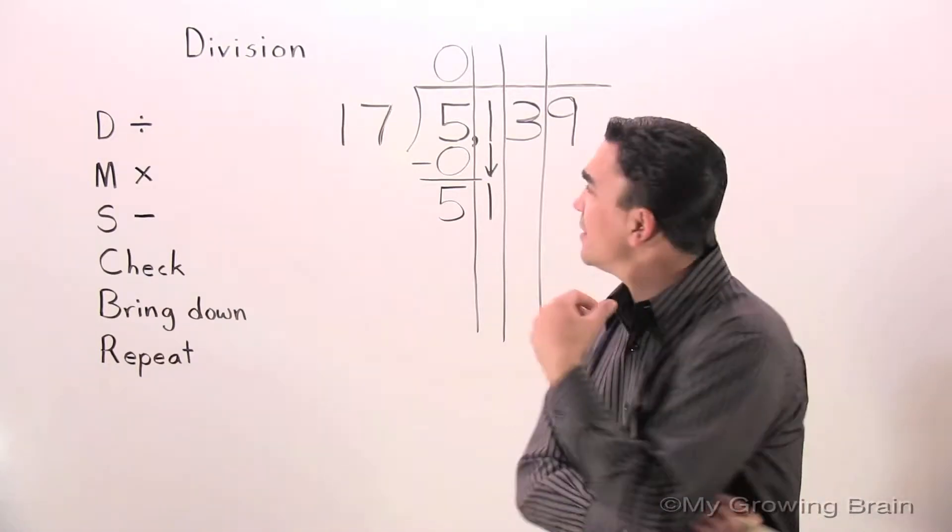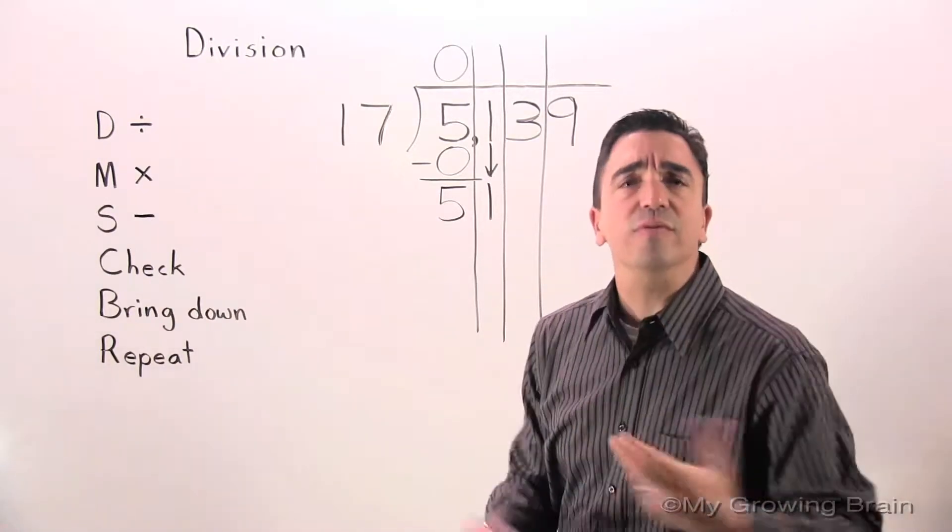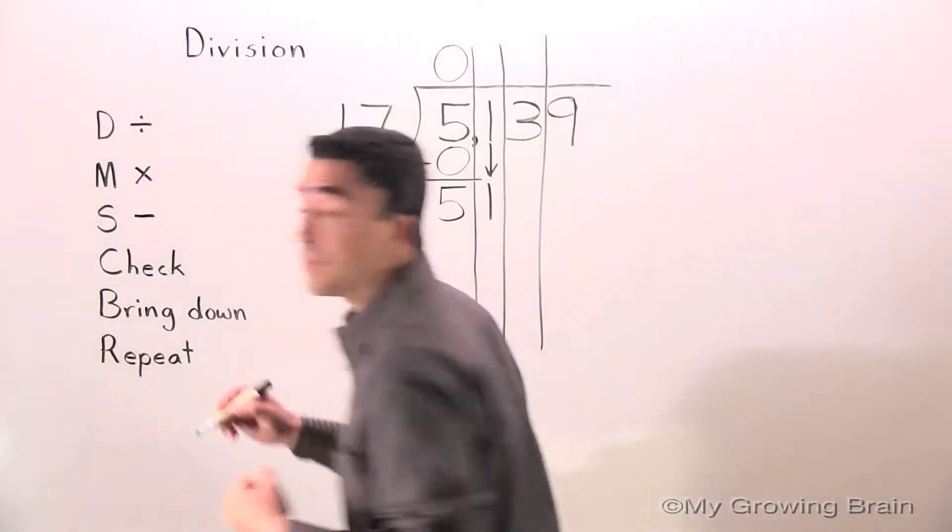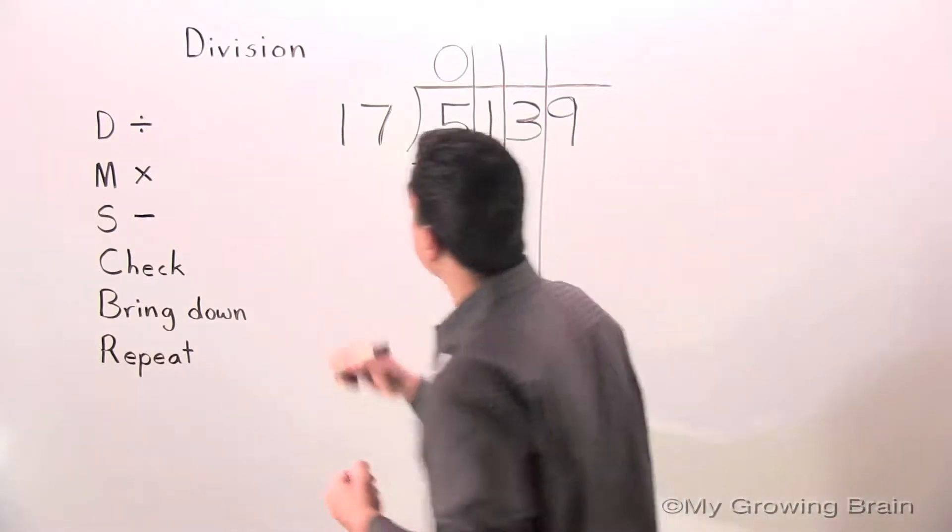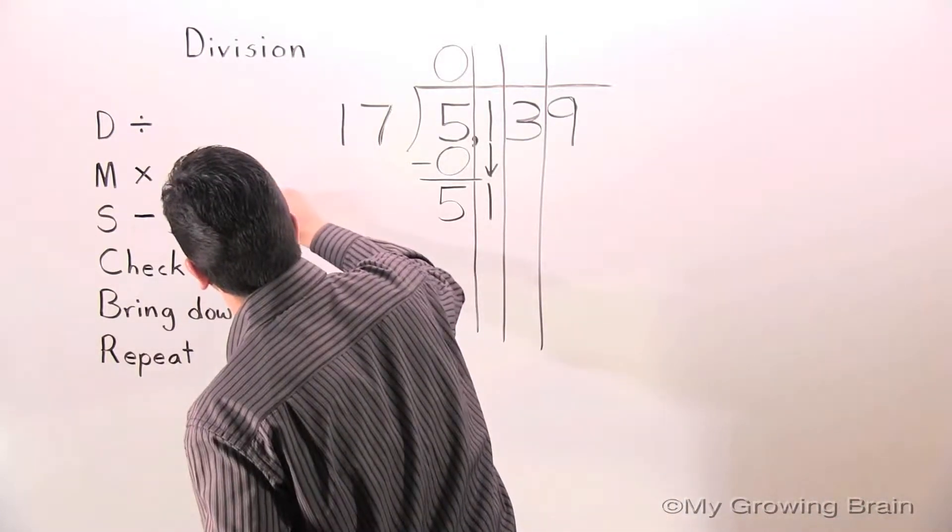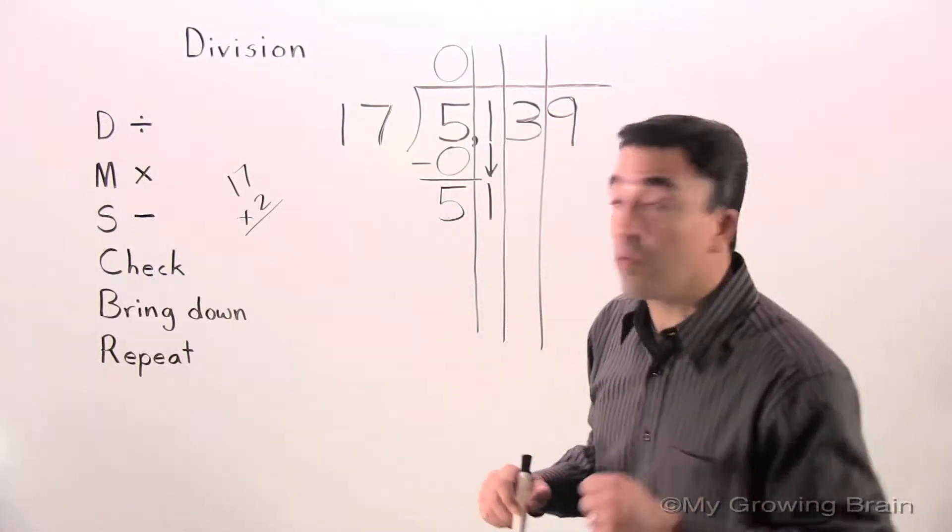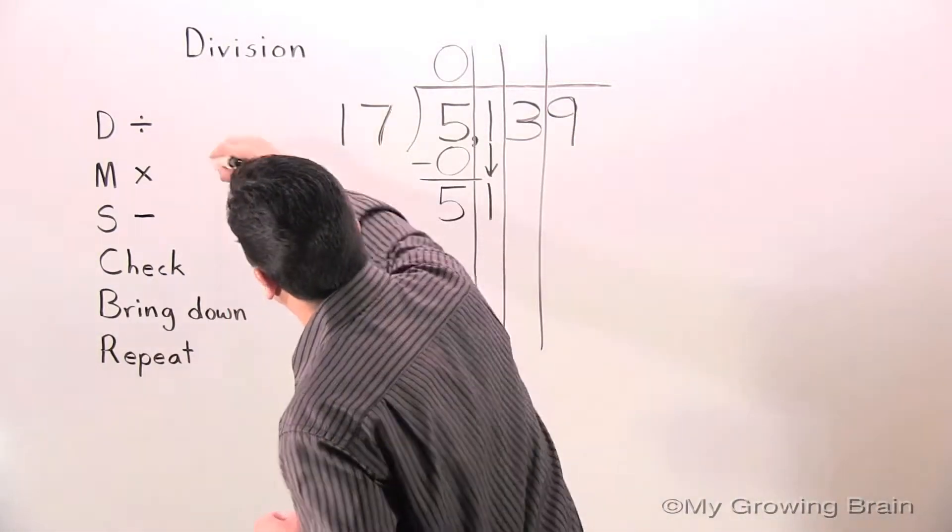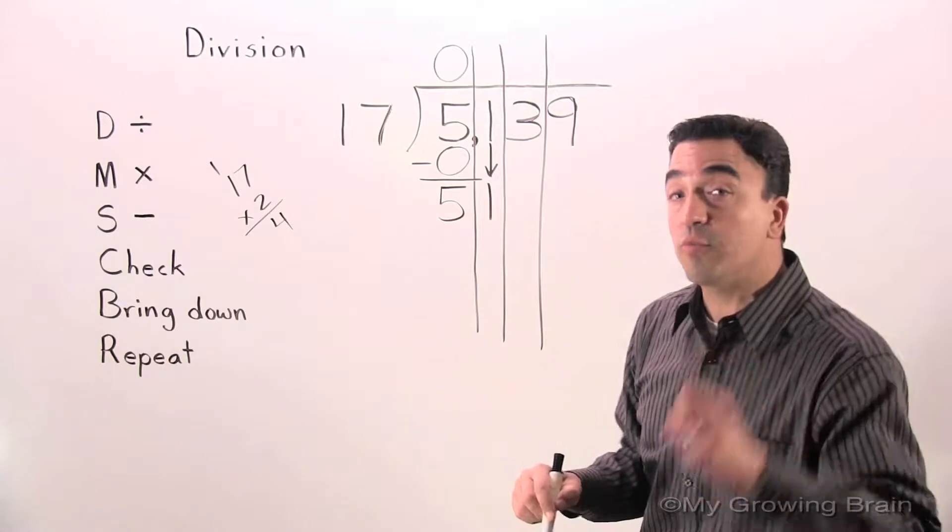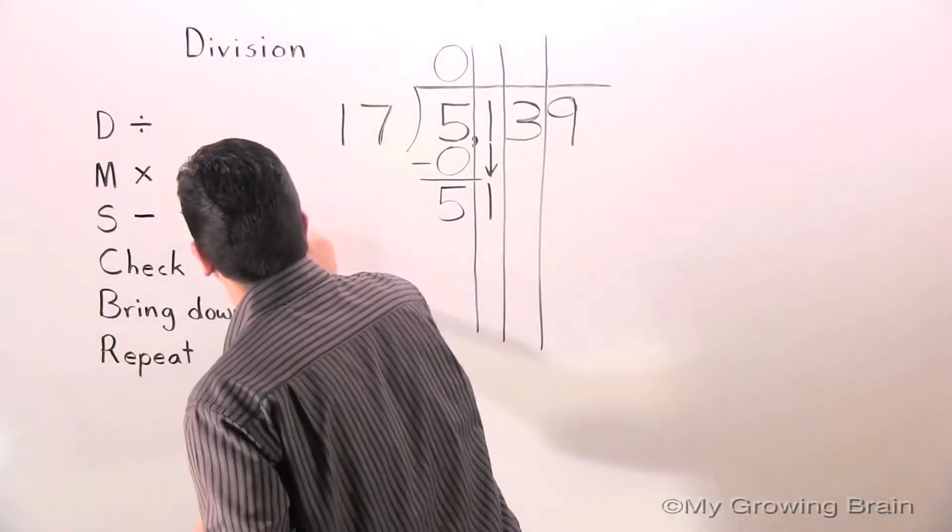Let's multiply 17 times 2. See what we get. We're going to experiment. 17 times 2. 2 times 7 is 14. Regroup the 1. 2 times 1 is 2 plus 1 is 3. 34.